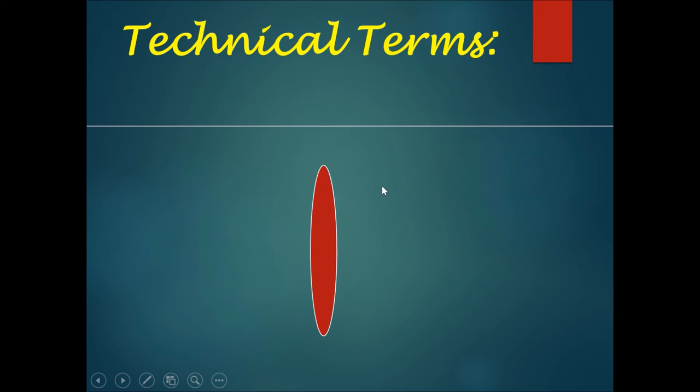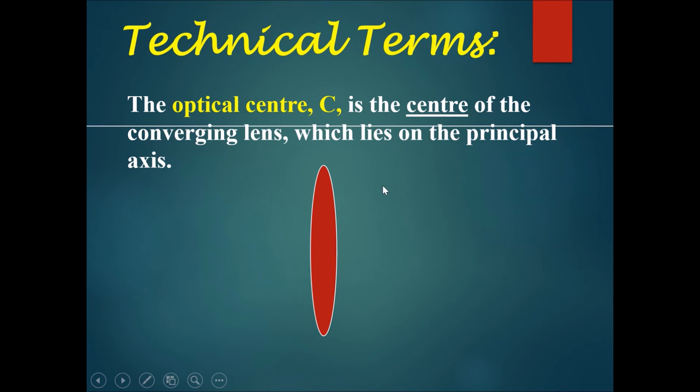Let's talk about some technical terms. The first one is the optical center C. This is the center of the converging lens, which lies on the principal axis. If you draw a line through the optical center, C will be in the middle.